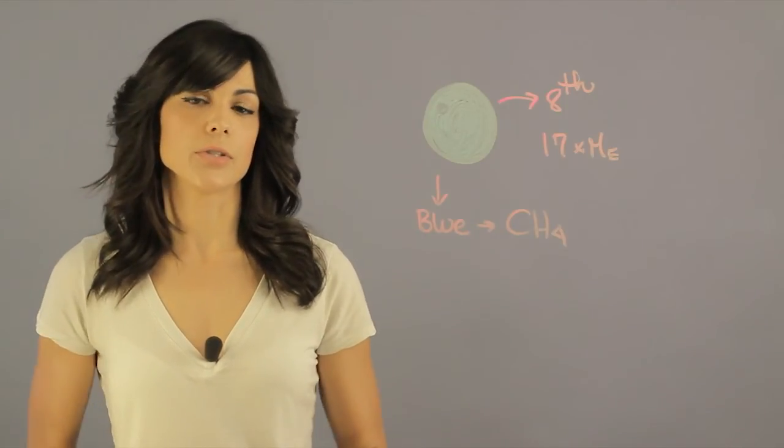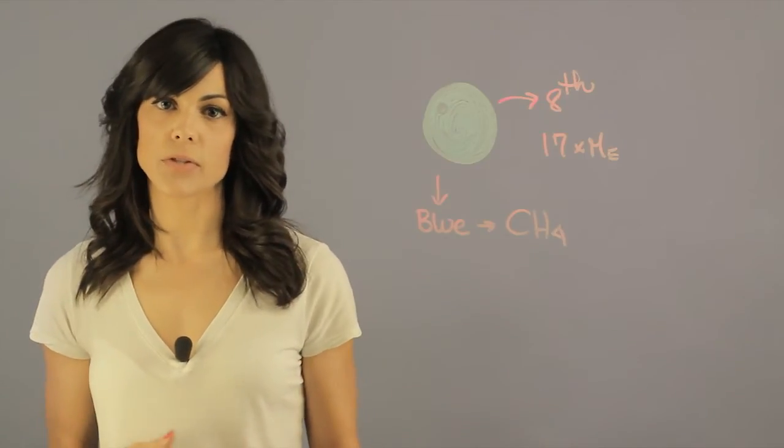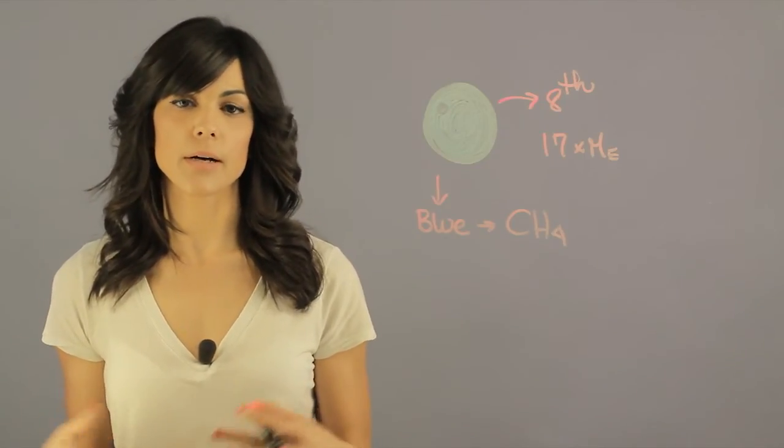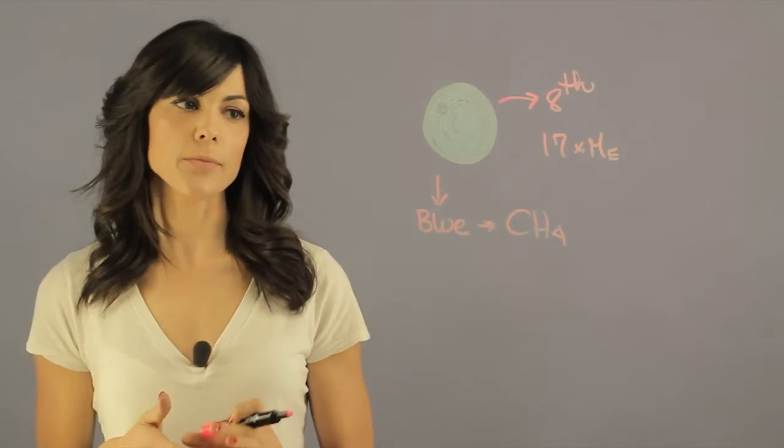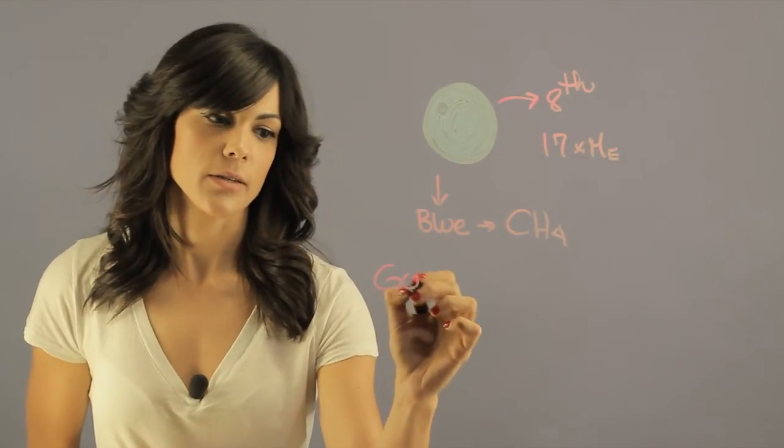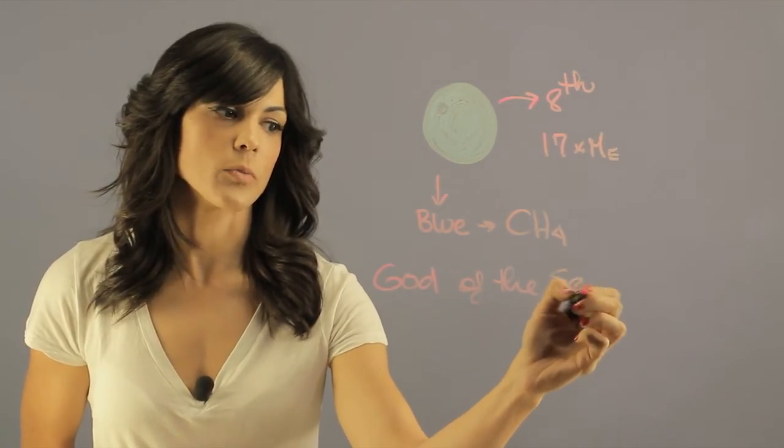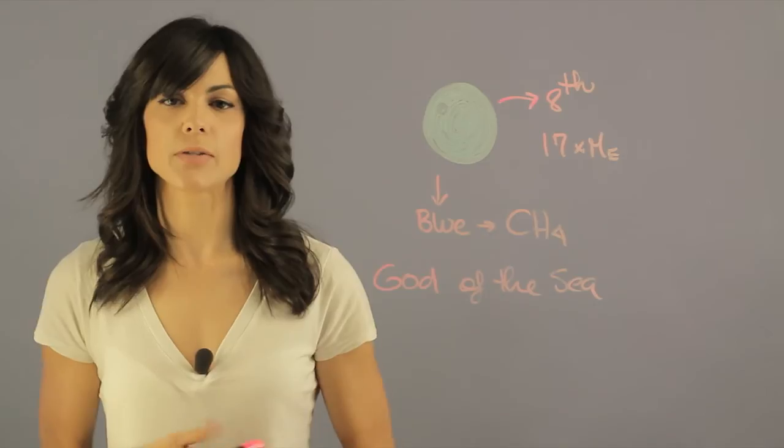After a while, they decided to continue the tradition of naming the planets after some mythological importance. So Neptune in Roman mythology is the god of the sea. And since Neptune was blue, it just seemed appropriate to name it Neptune.